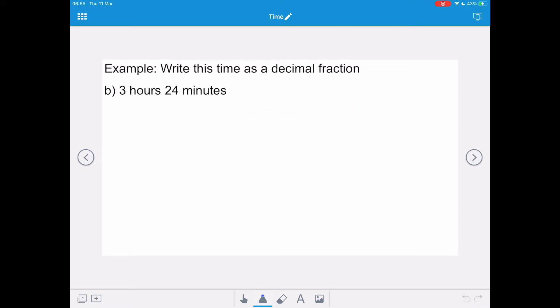In this one, we want to change 3 hours and 24 minutes into a decimal fraction. So we need to isolate our hours, and then add on our minutes changed into a decimal fraction. So it's 3 plus 24 over 60, and that equals 3 plus 24 divided by 60.